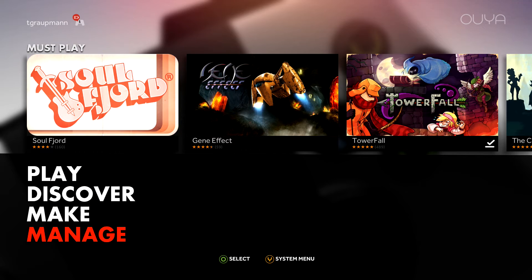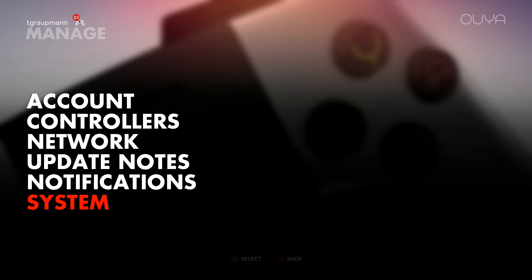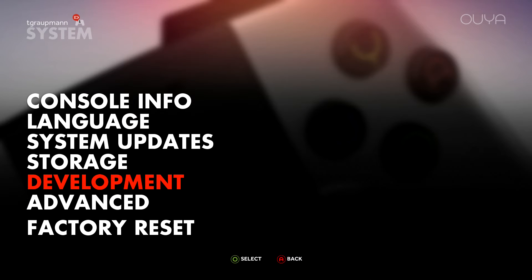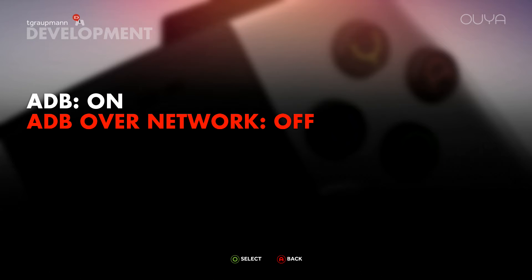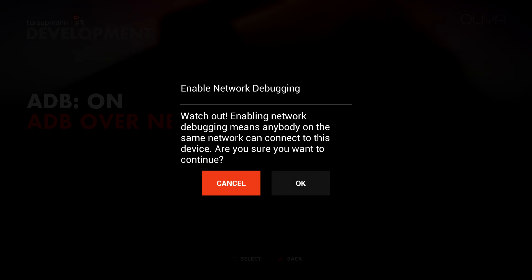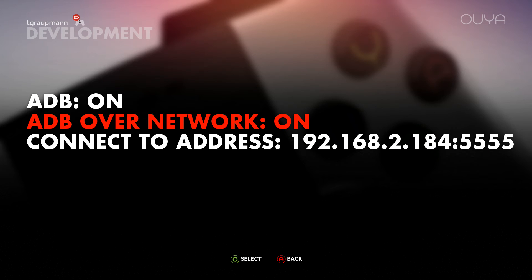So if you go to the Manage section and find System and Development, there's a new option for ADB over the network. If you turn that on and say OK, then you can use the Android debugger over Ethernet and Wi-Fi instead of using your micro USB cable.